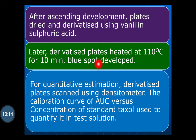After ascending development, the plates are dried at room temperature, then derivatized using vanillin sulfuric acid and heated at 110 degrees Celsius for 10 minutes. A blue spot is seen on the plate where the sample is present. For quantitative estimation, the derivatized plate is scanned using a densitometer. A calibration curve of area under curve versus concentration of standard taxol is plotted and used to determine the concentration of taxol in the test solution.